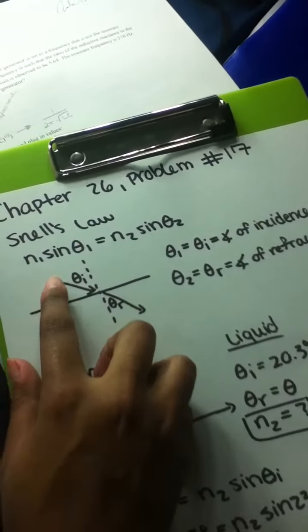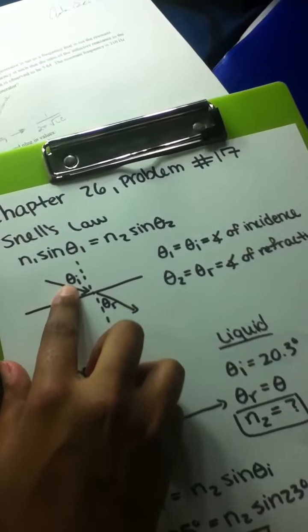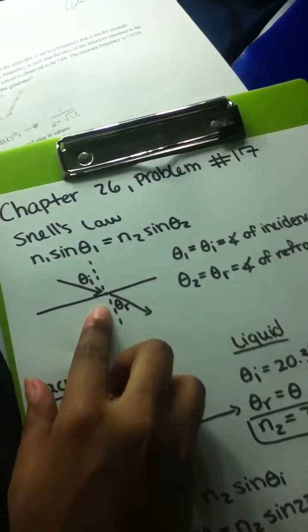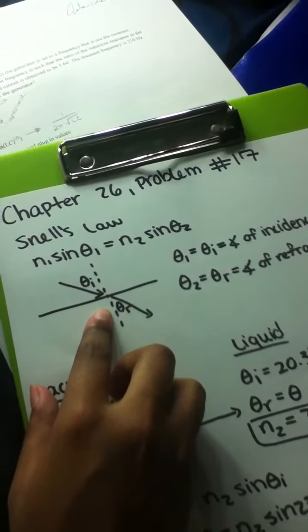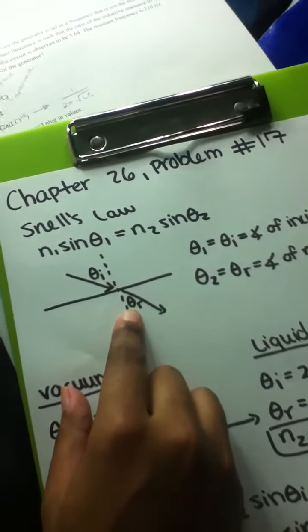When it doesn't hit at the normal, it creates the angle of incidence right here, θᵢ, and when it leaves the medium, it changes direction and makes θᵣ, or the angle of refraction right here.